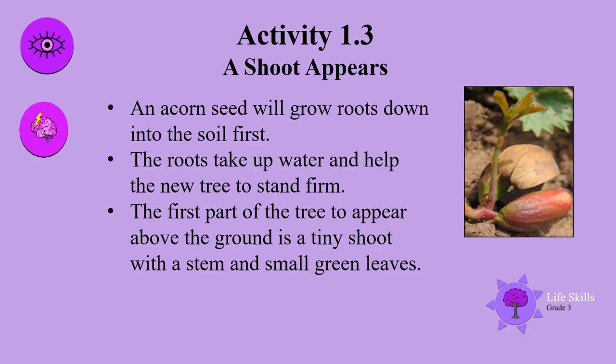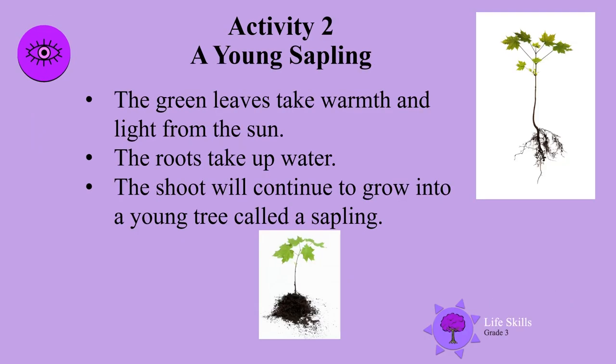The green leaves take warmth and light from the sun, and the roots take up water. The shoot will continue to grow into a young tree called a sapling.